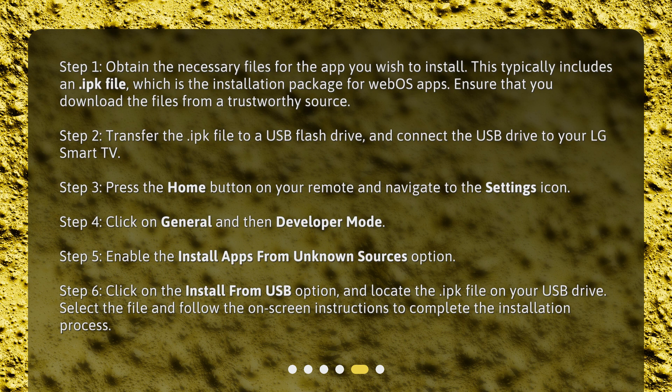Step 3: Press the Home button on your remote and navigate to the Settings icon. Step 4: Click on General and then Developer Mode. Step 5: Enable the Install Apps from Unknown Sources option. Step 6: Click on the Install from USB option, and locate the .ipk file on your USB drive. Select the file and follow the on-screen instructions to complete the installation process.